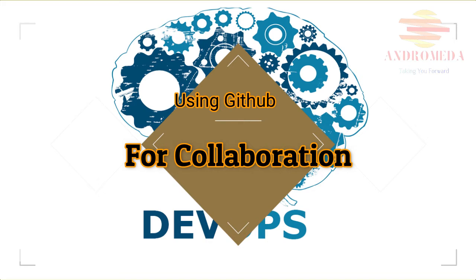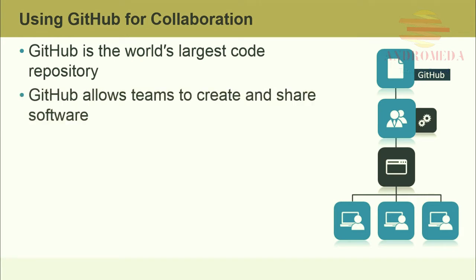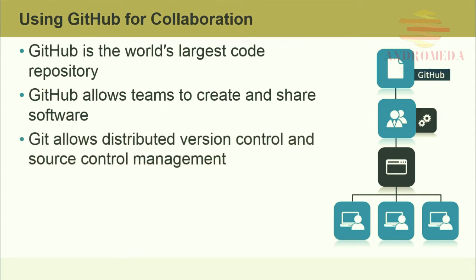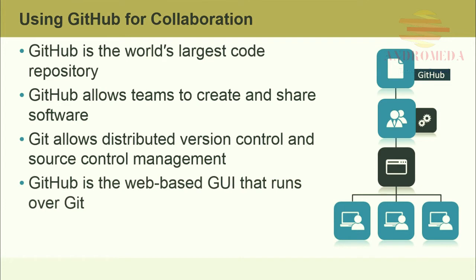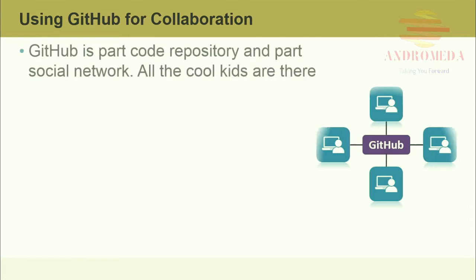GitHub is the world's largest code repository. Over the years, public source code control has gained widespread acceptance. GitHub allows teams to create and share software and is based on Git, which allows distributed version control and source management. Git has been around for years and is the actual source repository for other source control tools such as Bitbucket. GitHub is the web-based GUI that runs over Git and is built for the public, claiming over 24 million public repositories. Collaborative features include wikis and integrated bug tracking. GitHub is part code repository and part social network — most open-source projects, including Linux and Amazon Web Services, can be found there.